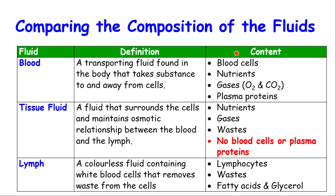The blood contains blood cells — white blood cells, red blood cells, and platelets. The blood also contains nutrients such as amino acids, carbohydrates like glucose, fatty acids, glycerol, and other nutrients that cells need. Inside blood you'll find gases such as oxygen that cells need, carbon dioxide that cells produce and need removed, and plasma proteins.